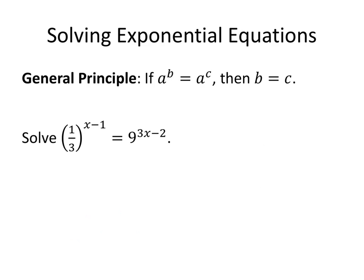Now let's try this one. We have 1 third to the x minus 1 equals 9 to the 3x minus 2. Again, if the bases on the left and right-hand side aren't the same, let's see what we can do to make them the same. In this case, I can write both 1 third and 9 with a base of 3. I can rewrite 1 third as 3 to the minus 1, and I can rewrite 9 as 3 squared. Once I simplify, I'll be able to set the exponents equal to each other as in the previous examples.